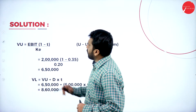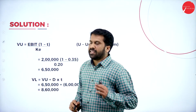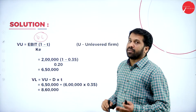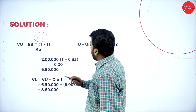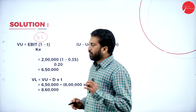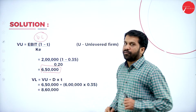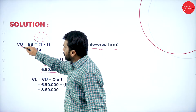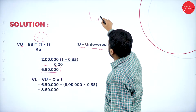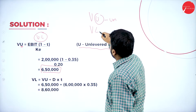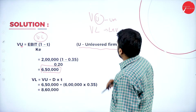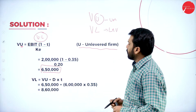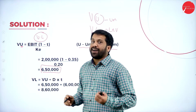Step 1 — Value of unlevered firm U: VU = EBIT × (1 − T) ÷ KE = 2,00,000 × (1 − 0.35) ÷ 0.20 = 2,00,000 × 0.65 ÷ 0.20 = Rs. 6,50,000. Remember: wherever we use VU it is unlevered, wherever we use VL it is levered.